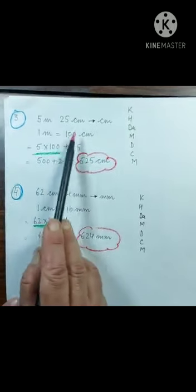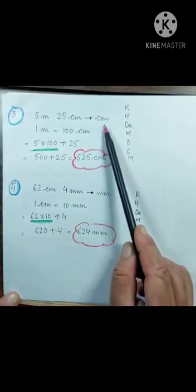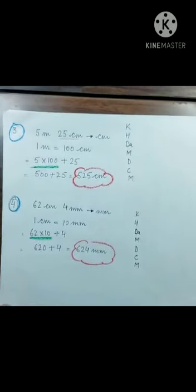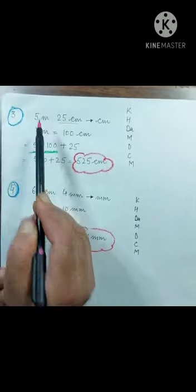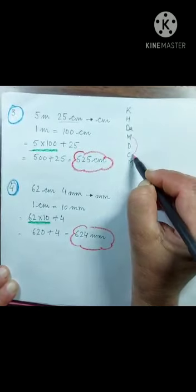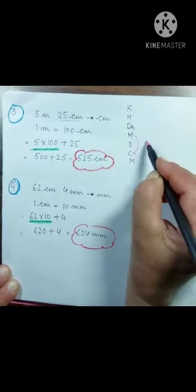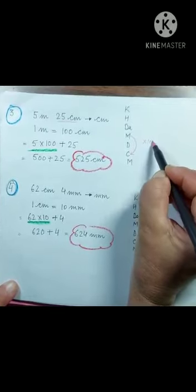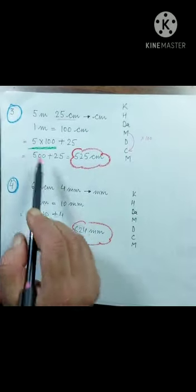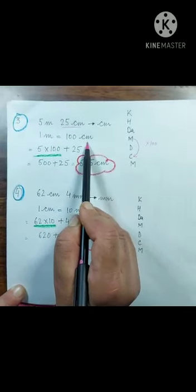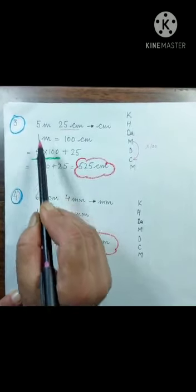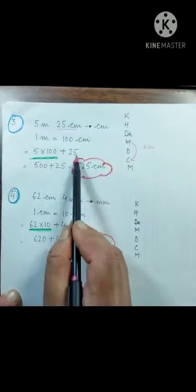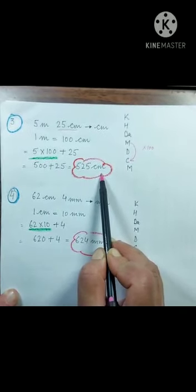5 meters 25 centimeters — convert to centimeters. The 25 centimeters are already in centimeters. Convert only 5 meters to centimeters — bigger to smaller, two steps down, multiply by 100. So 5 multiplied by 100 plus 25 equals 500 plus 25 equals 525 centimeters.